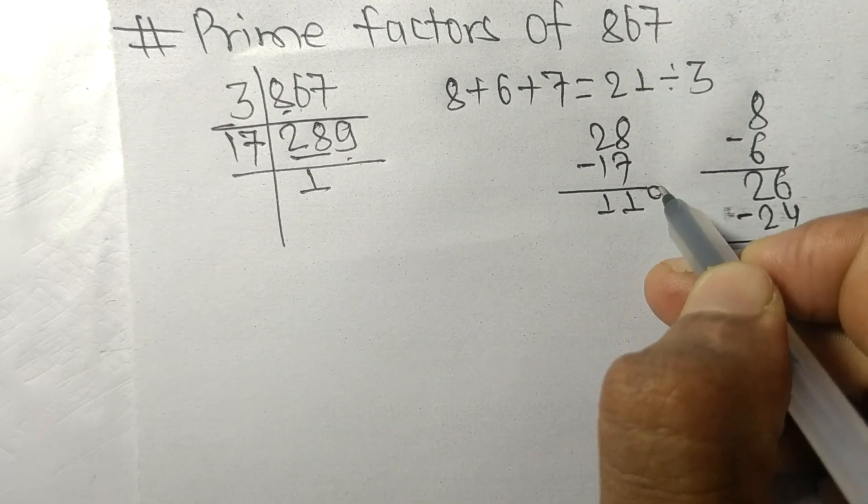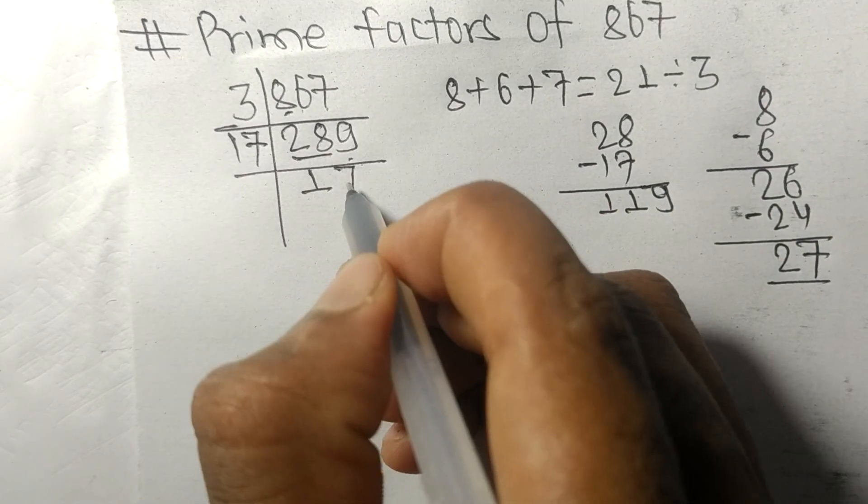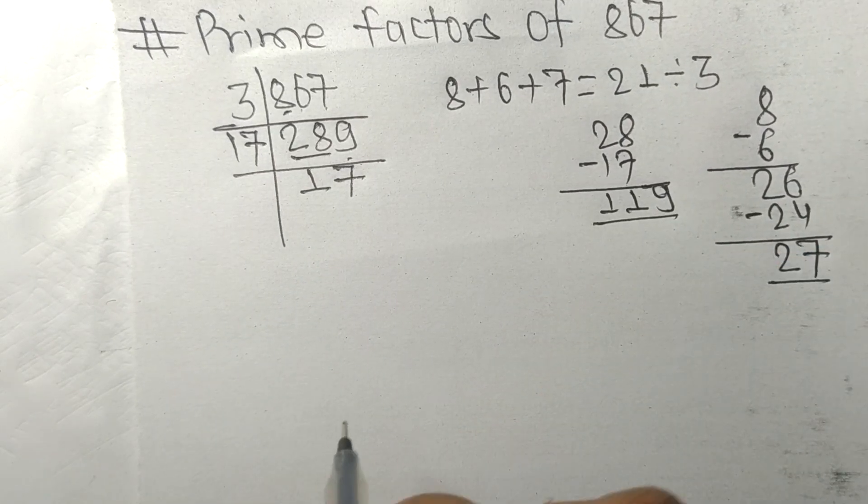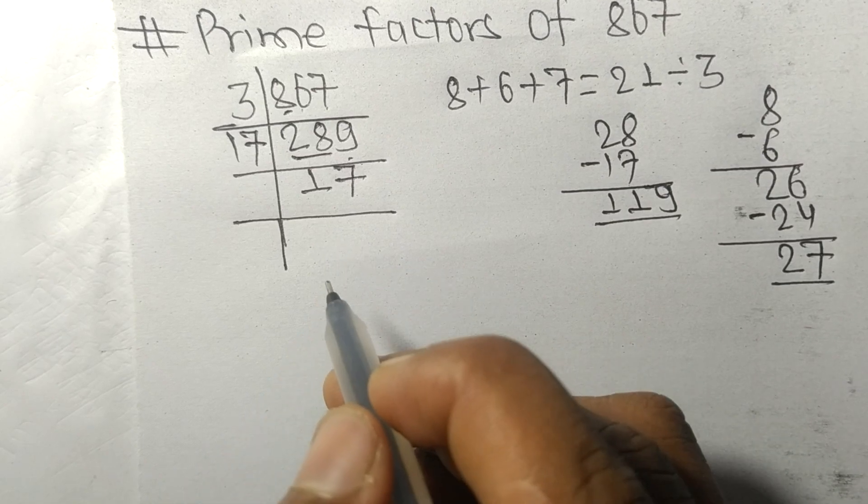So 17 times 7 is 119. Now we got 17, which is a prime number, so it is exactly divisible by 17 only, and on dividing we get 1.